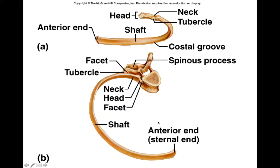This is a rib. Ribs have a shaft, and then they have a posterior articulation with the thoracic vertebrae. The head of the rib articulates with the body of the thoracic vertebra, and the tubercle articulates with the transverse process. And that's it for ribs.